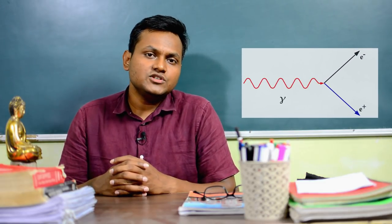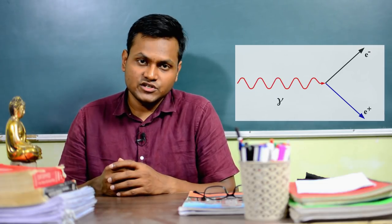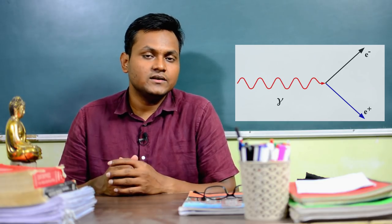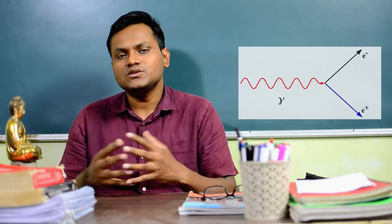The other process is internal pair creation, which happens when the excess energy from a nuclear energy level transition is high enough to create an electron-positron pair. This is the reverse of pair annihilation — where an electron and a positron come together to annihilate into pure energy. In internal pair creation, if the energy emitted by the nucleus is greater than the combined rest mass energy of an electron and a positron, it can lead to the creation of that electron-positron pair.